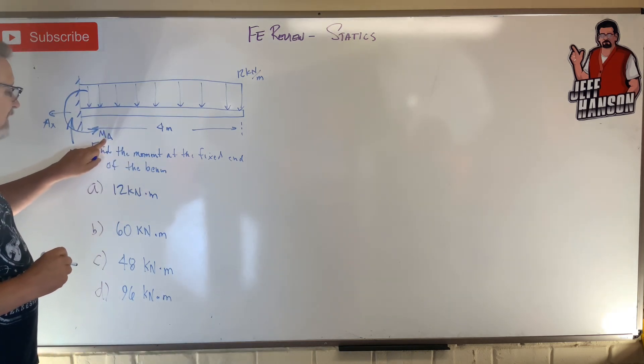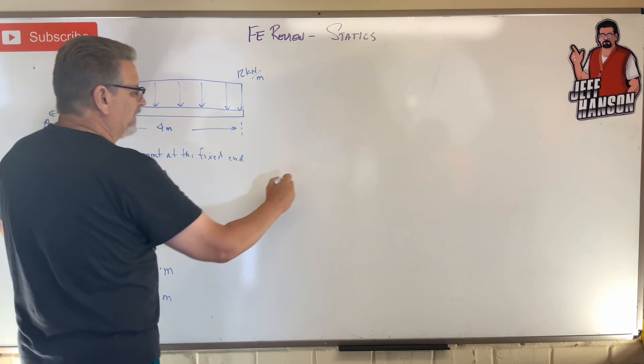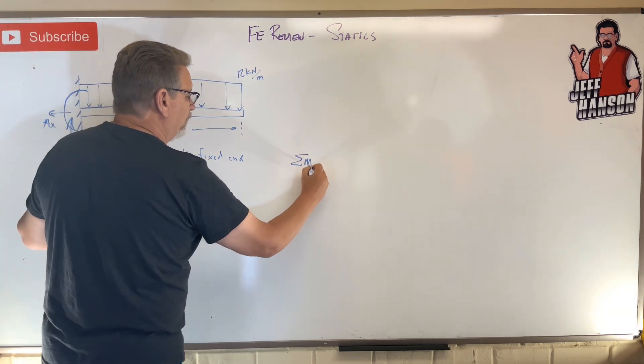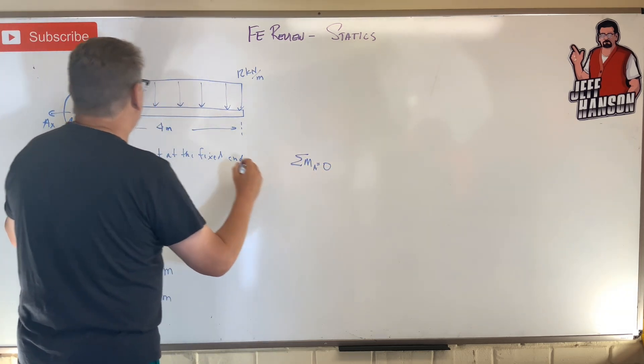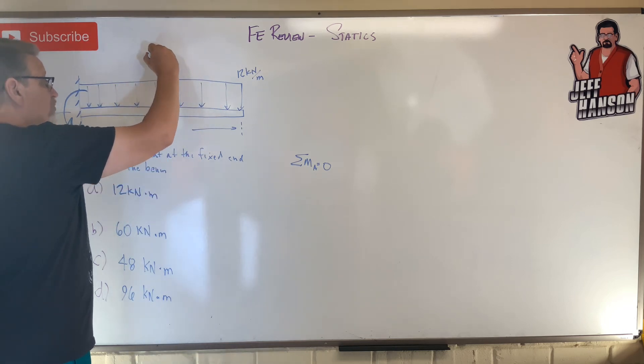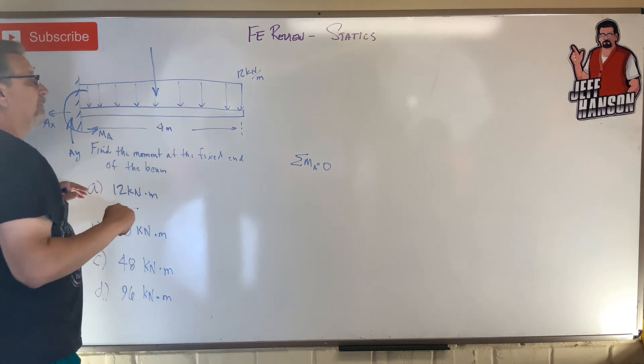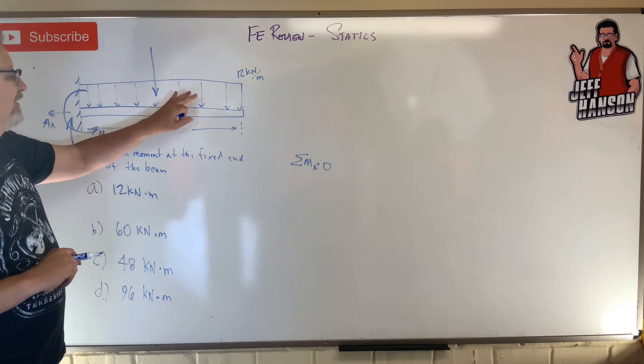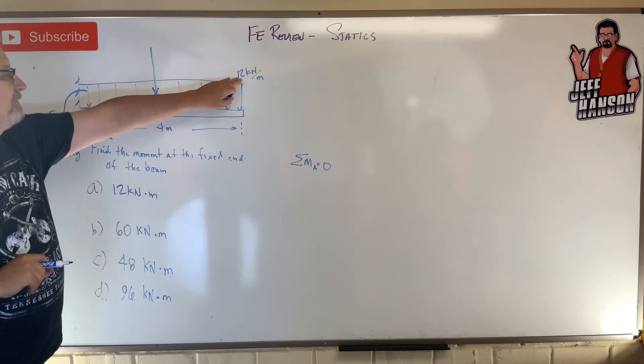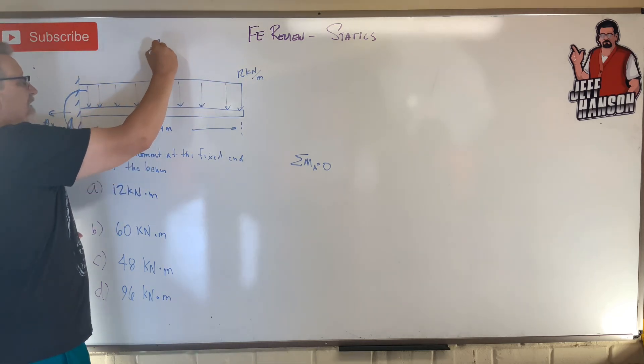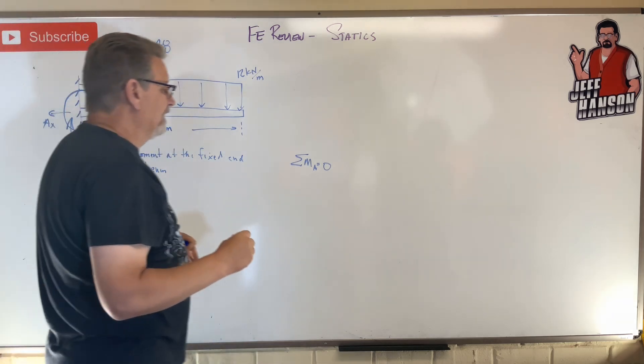Okay, how do we get that? Well that's pretty easy. Take the sum of the moments at point a. Now this is a distributed load, so if we turn that into a concentrated load, we apply one big force in the middle of the rectangle at 4 times 12, that's 48.